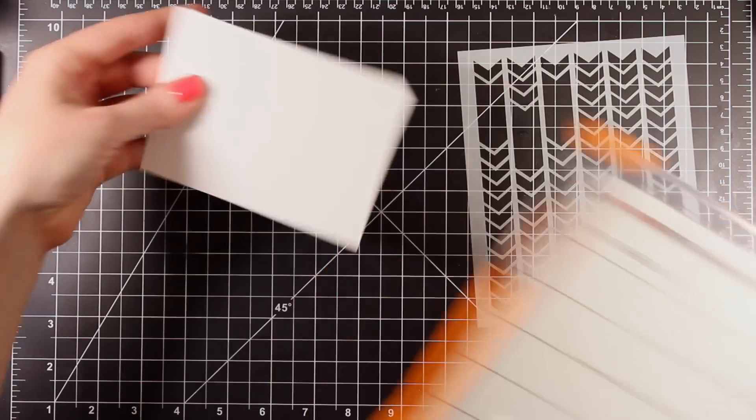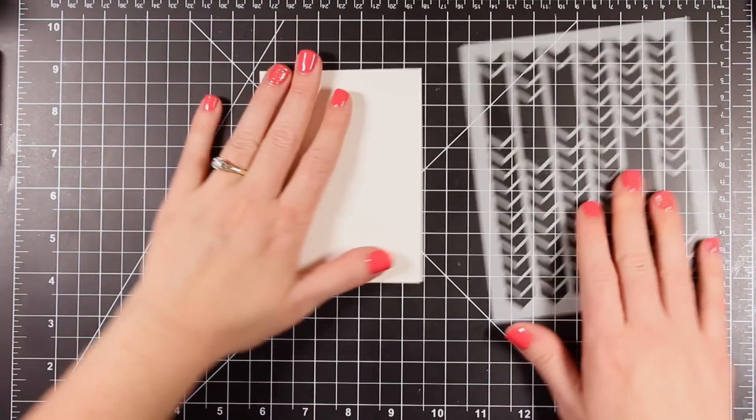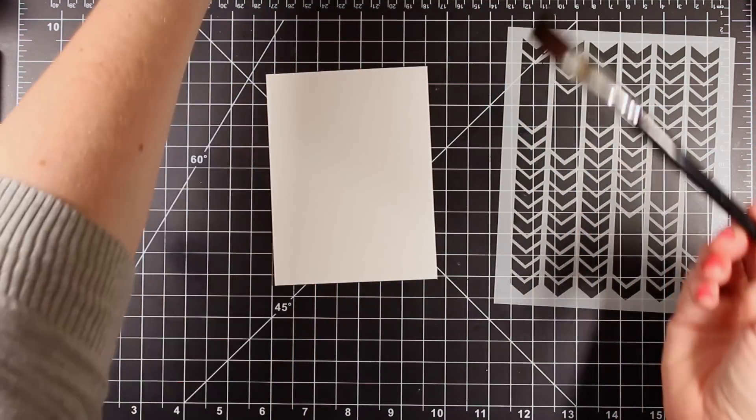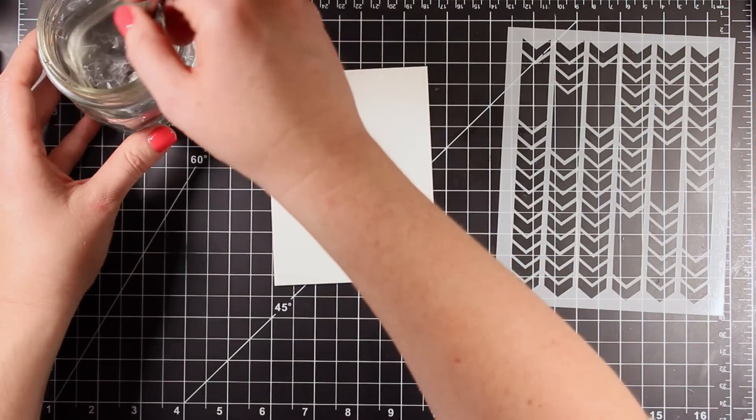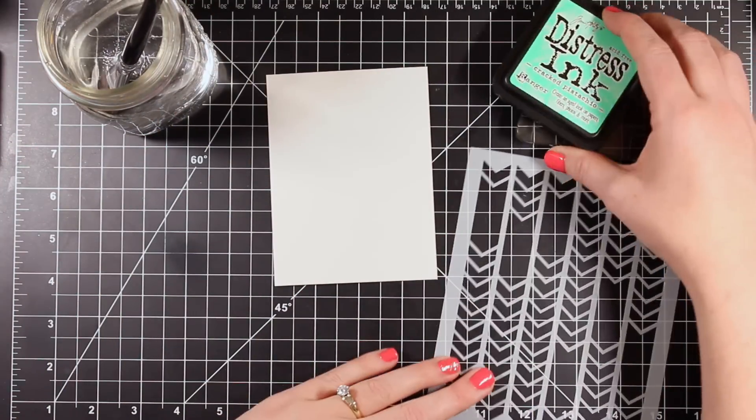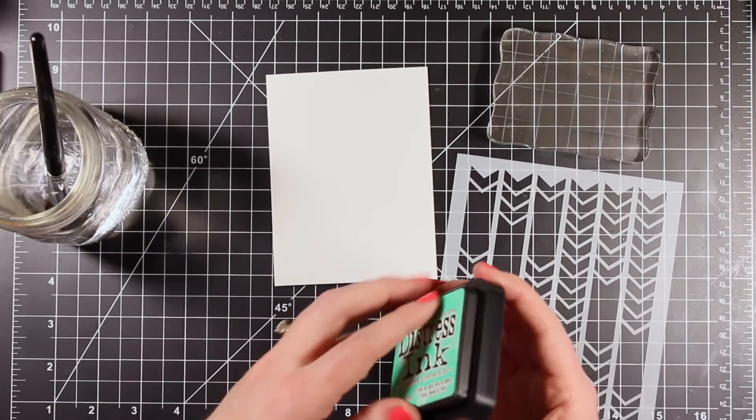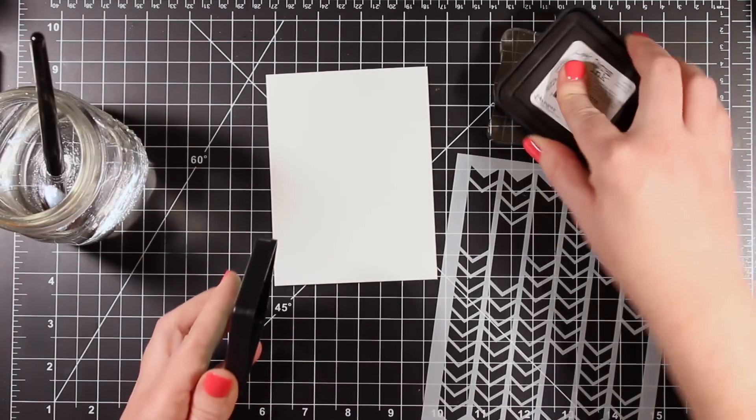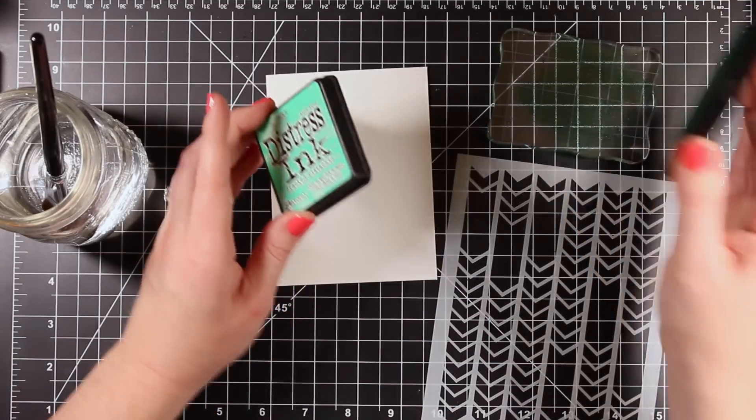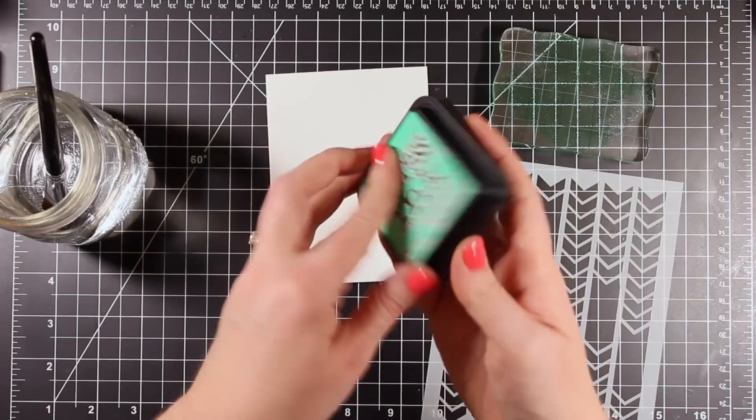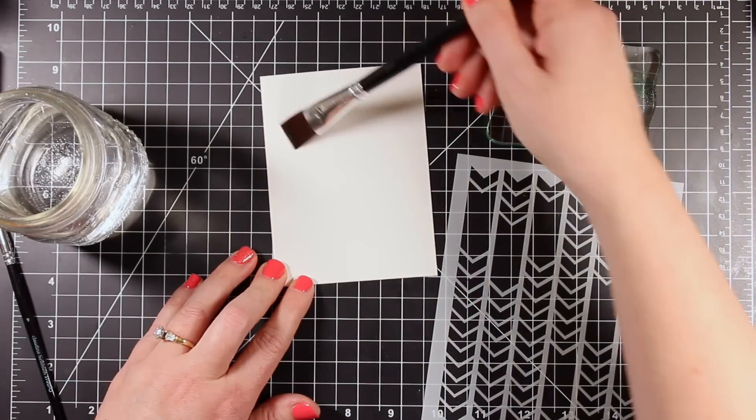I'm starting out with a piece of Ranger watercolor paper here. This is a nice bright white watercolor paper and I'm going to be doing some watercoloring and then some stenciling with that Hero Arts stencil. I'm starting out with this Cracked Pistachio Distress Ink and I'm pressing it to an acrylic block because I'm going to be doing some watercoloring. This is one of my favorite ways to use distress inks.